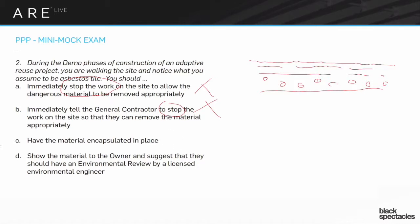Clearly the correct answer is D: show the material to the owner. Remember, you're the agent of the owner — your role is to bring the owner up to speed on anything important for them to understand, and then let the owner either get a phase one or, if they've already done a phase one, do a phase two. Phase one is a general review looking at the history of the building and documentation from the city. Phase two is more serious — actual measuring and testing of materials. For something like asbestos tile, you absolutely want to hand that over to the owner.